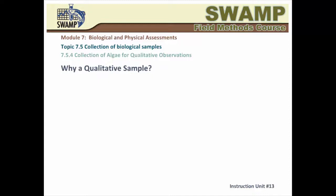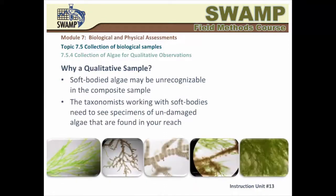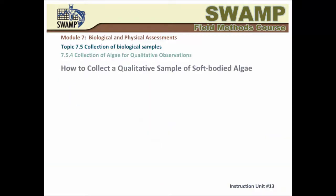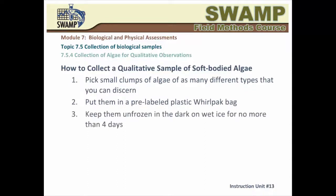Unlike diatoms, which have an external skeleton made of silica, soft-bodied algae may be unrecognizable in the composite sample. The taxonomists working with soft-bodied algae samples require that you also include a qualitative sample of undamaged algae collected from the entire reach. The sample should include all the various algal clumps that you see in the stream and its margins, including mats of blue-green algae in slow-moving water and microalgae that cling to sediments at the bottom of pools. To collect the qualitative sample, you simply pick small clumps of algae of as many different types as you can discern, put them in a pre-labeled plastic whirlpack bag, and keep them in the dark on wet ice for no more than four days.